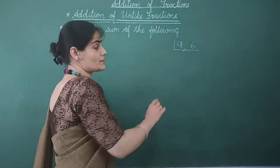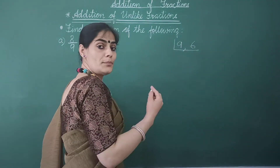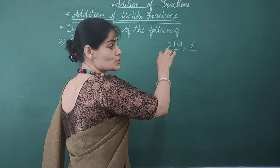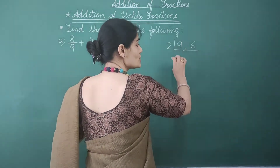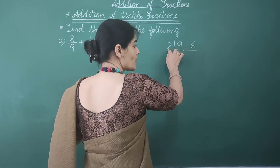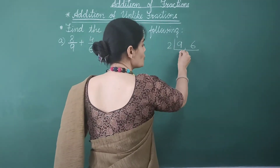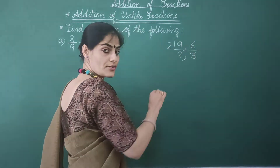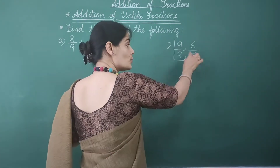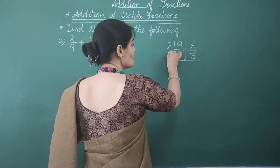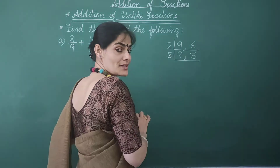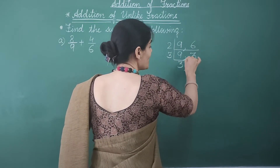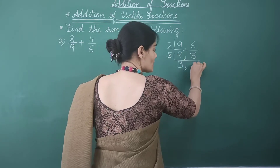When we find the LCM, if there is an even number, we begin with 2. Since 9 is not divisible by 2, we move to the next number. 6 divided by 2 gives us 3, so we write 9 as it is and write 3 in place of 6. Both numbers are now odd, so we divide both by 3. 9 divided by 3 gives us 3, and 3 divided by 3 gives us 1.